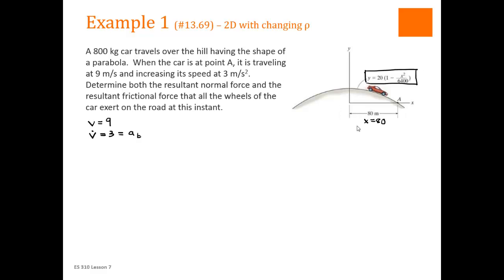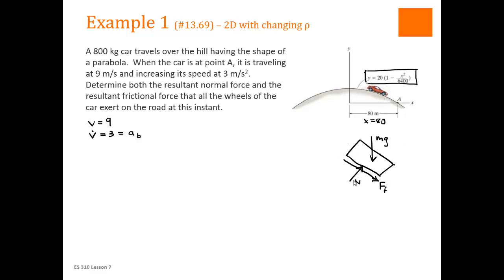Let's start with drawing our free body diagram. The car is at A, so it has a slope. The normal direction is normal to the car's surface. The friction between the wheel and the road is what causes the car to move — it's not sliding. So we have F_f (friction), N (normal force), and the car's weight MG going straight down. Now we draw our coordinate system: the normal direction points towards the center of the curve, and the tangential direction is along the curve in the direction of motion. We define positive a_t in the tangential direction and positive a_n pointing inward.